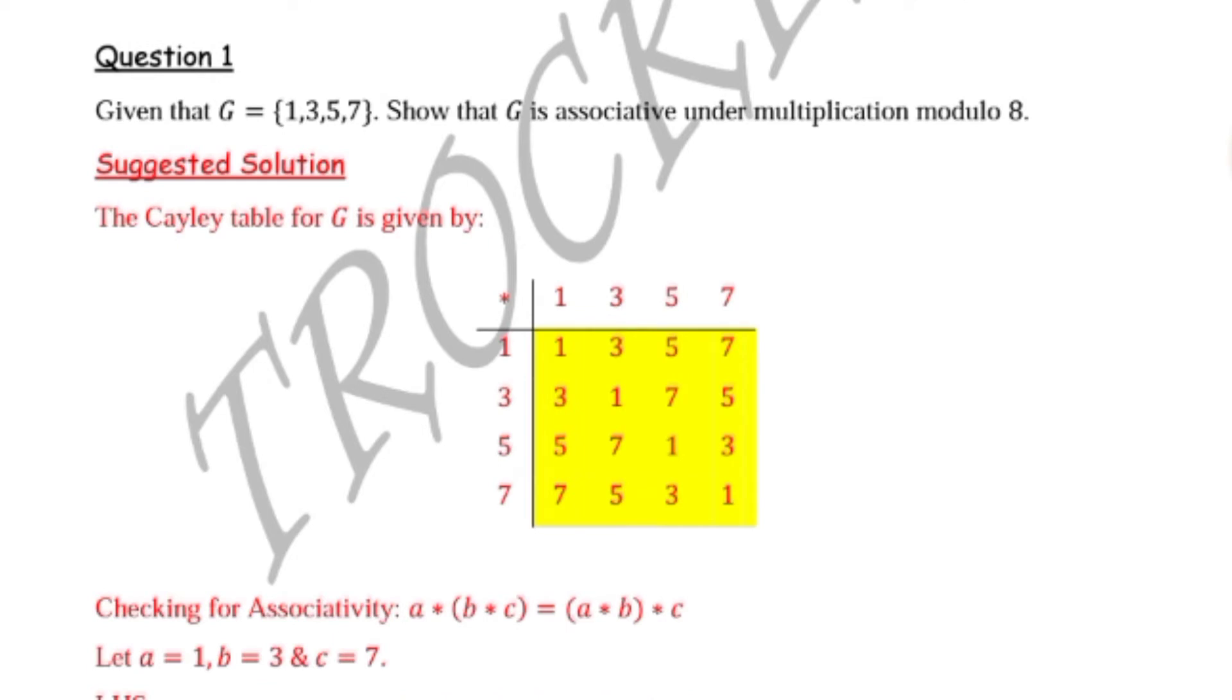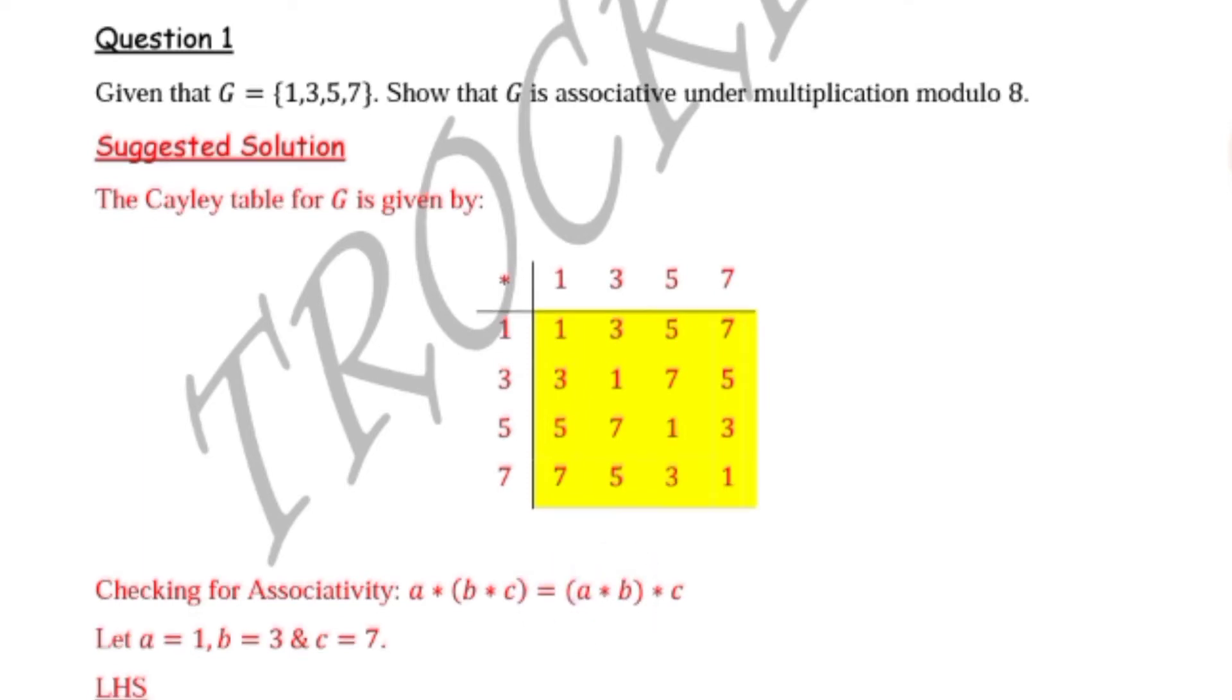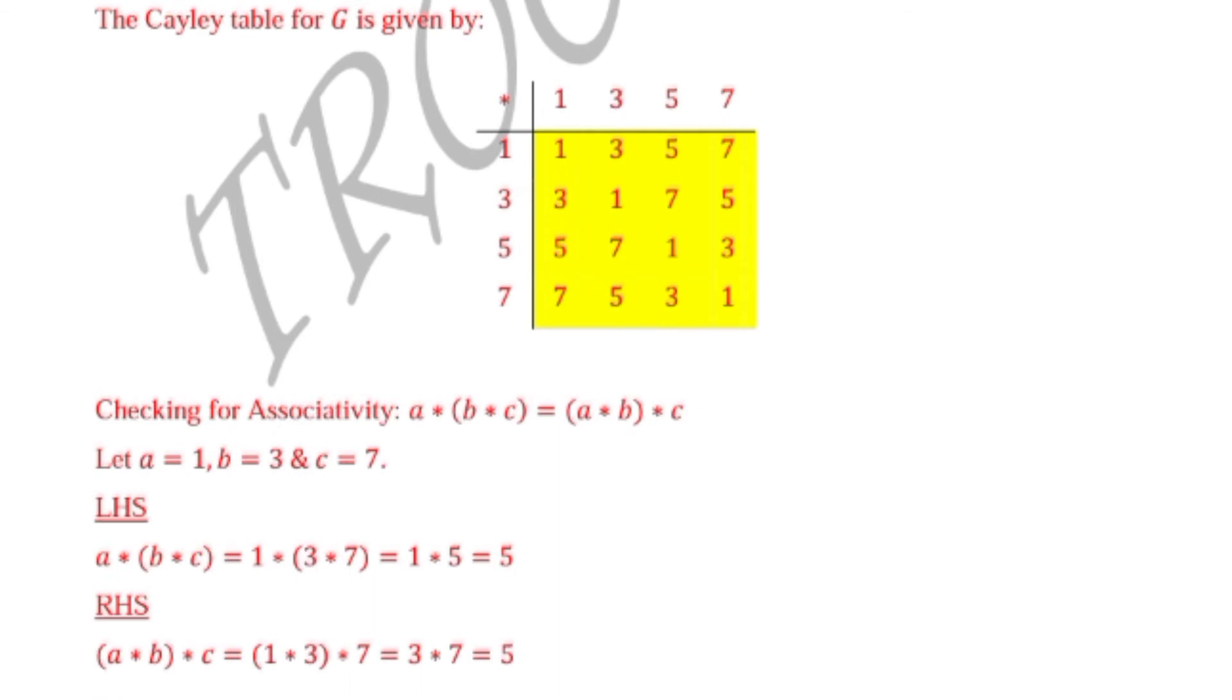A set is associative under a binary operation if A star (B star C), which means we start with B star C, equals (A star B) star C, which means we start with A star B. For it to be associative, the answers we get should be identical.